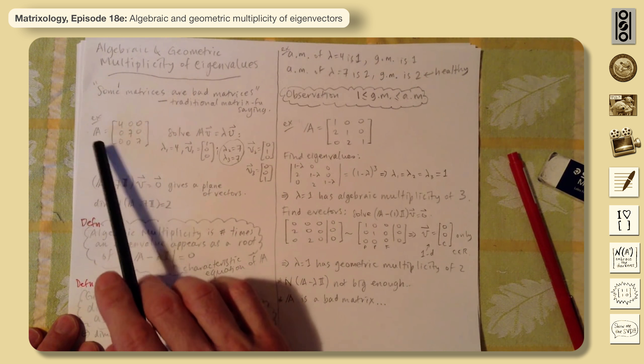So algebraic multiplicity for 4 is 1. It has the same geometric multiplicity. So that's a healthy thing. And again, a healthy thing here. Algebraic multiplicity of lambda equals 7 is 2. Geometric multiplicity of 7 is 2.